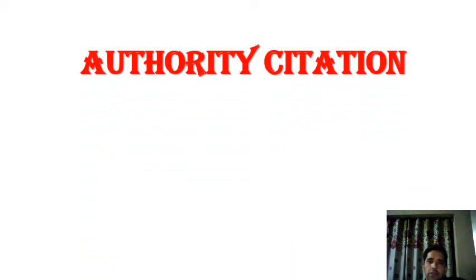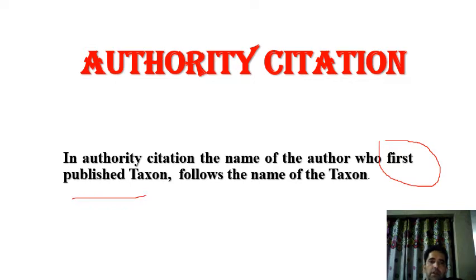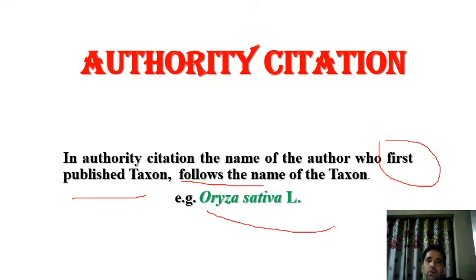This lecture is about authority citation. Authority citation means the name of the author which is given to the plant along with the plant name. It is defined as a method in which the name of the author who first published the taxon in a scientific journal follows the name of the taxon.